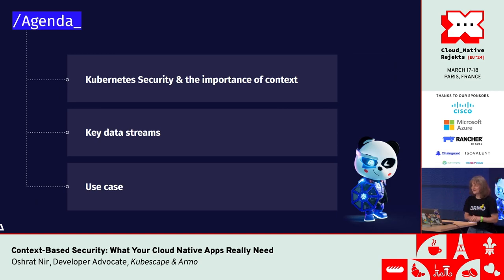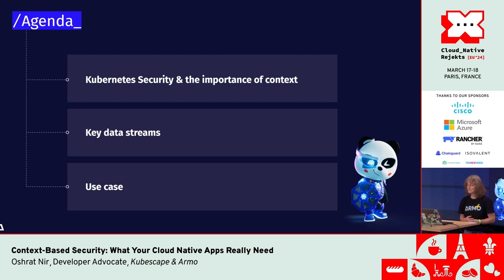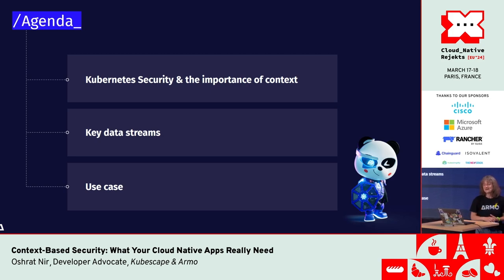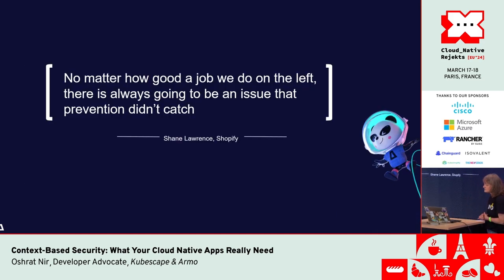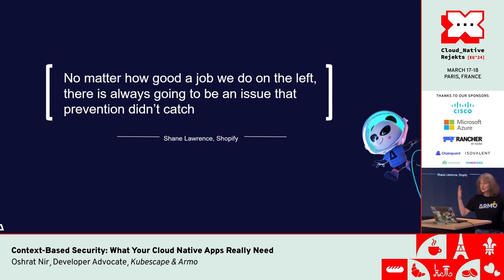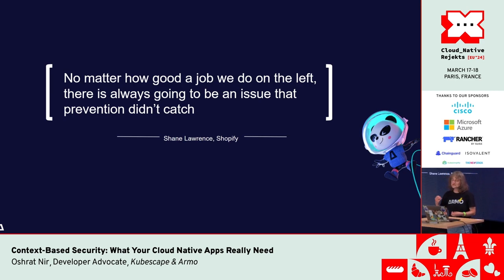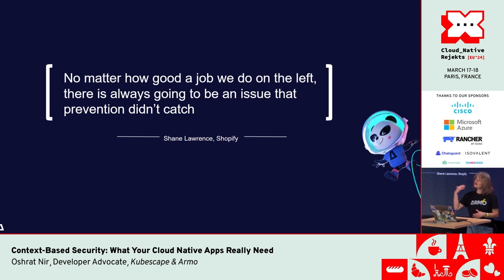You may have caught on by now — I'll be talking about Kubernetes security, but I won't be talking about shifting security left. You've heard that, it's a great idea, don't stop doing that. But as Timo once told me, you need to look right in order to shift left. Understanding workload behavior is crucial to getting the correct context for securing Kubernetes from left to right. An interesting quote from Shane Lawrence of Shopify, who spoke at KubeCon North America in 2020: no matter how good a job we do on the left, there's always going to be an issue that prevention didn't catch. Security on the left is typically best-practices based, which is great — we've got our benchmarks, we know what to do. But today I want to show you how context elevates it.